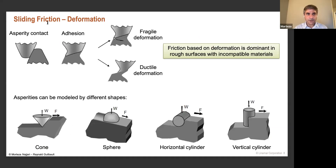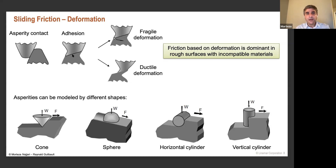Looking at another mechanism of sliding friction — deformation — when asperities touch and press against each other after initial adhesion, depending on which material is harder and which is softer, deformation occurs in two cases: fragile or ductile. When two surfaces are incompatible in hardness, friction based on deformation is the dominant case.